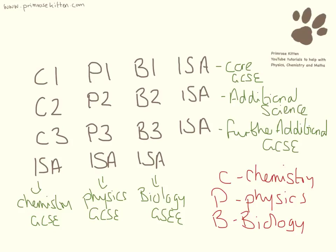All the information that you need to know is exactly the same. So C1, as the information for the core, is going to be exactly the same information you need for the chemistry GCSE. It's just packaged up together ever so slightly differently.